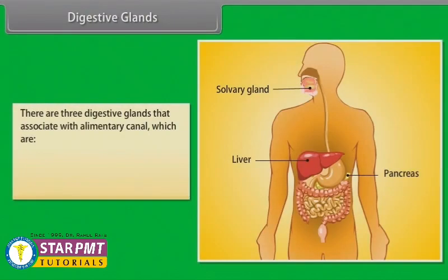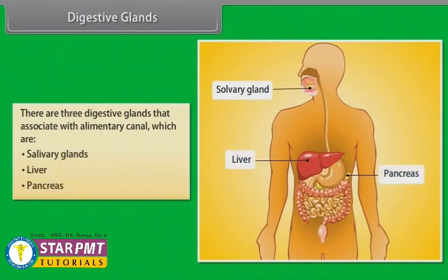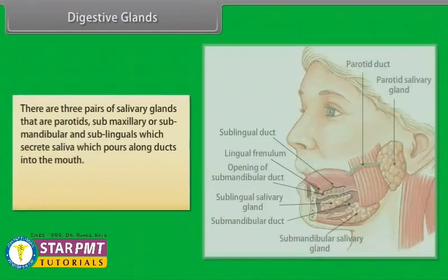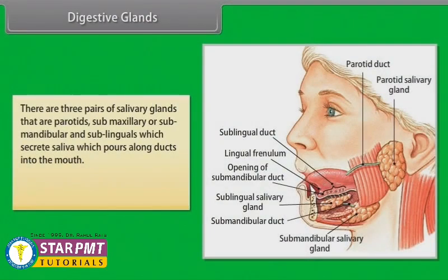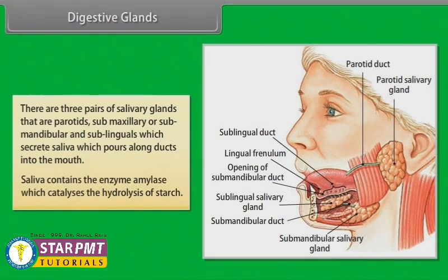There are three digestive glands associated with the alimentary canal: salivary glands, liver, and pancreas. There are three pairs of salivary glands — parotids, submaxillary or submandibular, and sublinguals — which secrete saliva that pours along ducts into the mouth. Saliva contains the enzyme amylase, which catalyzes the hydrolysis of starch.